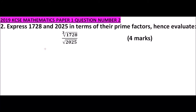2019 KCSE mathematics paper one, question number two. We are told to express 1728 and 2025 in terms of their prime factors, then hence evaluate the cube root of 1728 divided by the square root of 2025.